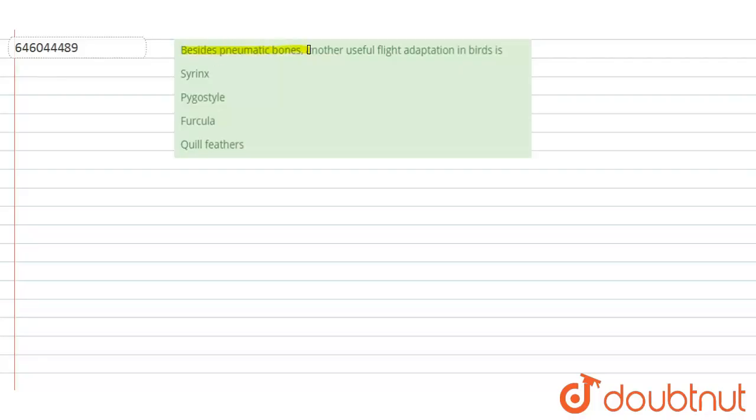Hello everyone, the question here is: Besides pneumatic bones, another useful flight adaptation in birds is - first option is syrinx, second is pigo style, third is furcula, and the fourth option is quill feathers.